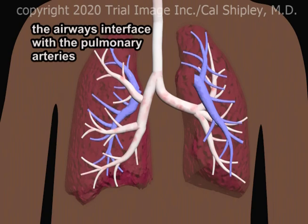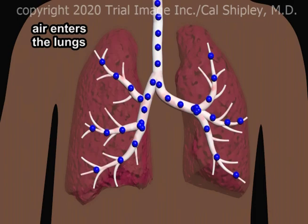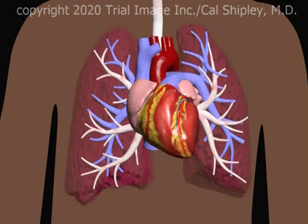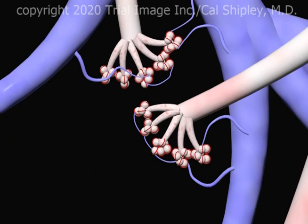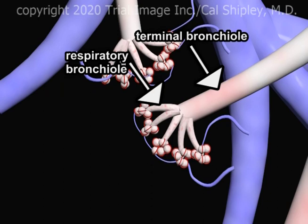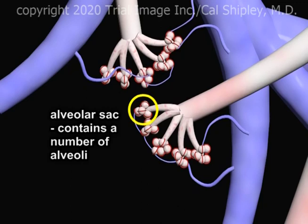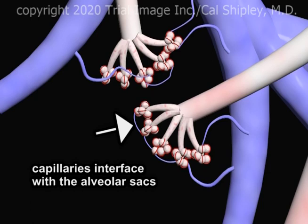To begin the process of blood oxygenation, air is inhaled into the bronchial tree. The pulmonary arterial system and bronchial tree divide down into ever-smaller branches. The smallest arterial branch is known as a pulmonary arteriole. Tiny airways known as terminal bronchioles give way to even smaller airways known as respiratory bronchioles. At the end of the respiratory bronchioles are structures known as alveolar sacs. Each alveolar sac consists of a number of individual alveoli. The smallest blood vessels, known as capillaries, originate from the pulmonary arterioles and interface directly with the alveolar sacs.